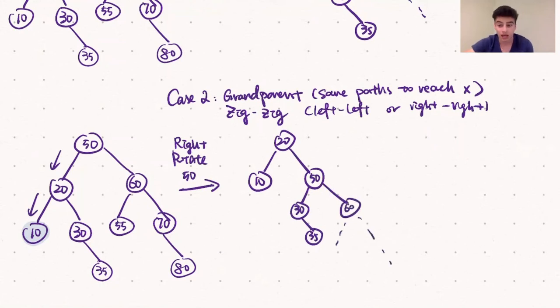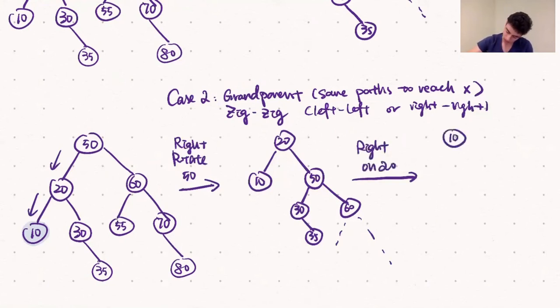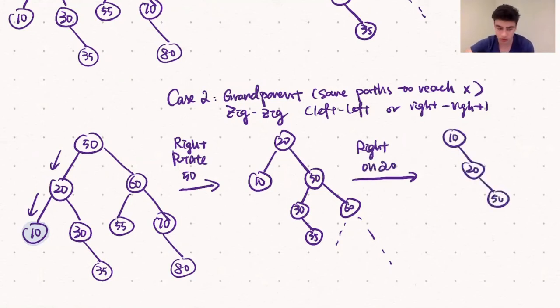Next we right rotate 20. This leaves us with 10 at the root, 20 as 10's right child, 50 as 20's right child, and 50's subtree the same as before.